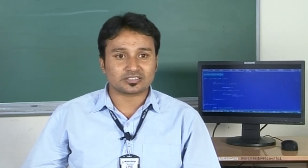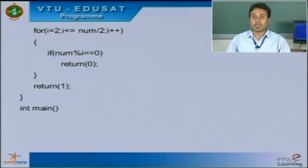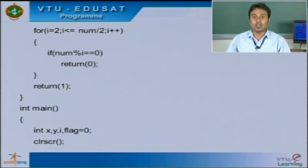Before looking into the function, let us go back to the main function where the execution of the program starts. As we can see, int main() is the main function from which program execution starts. The first line inside the main function is the declaration, where we declare our variables along with their data types. Here we have variables x, y, i, and flag which is set to 0, all of them belonging to integer data type. The next line is clrscr(), used to clear the output screen.